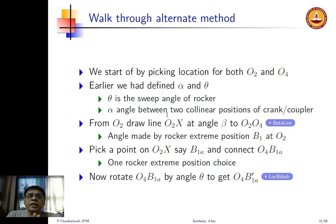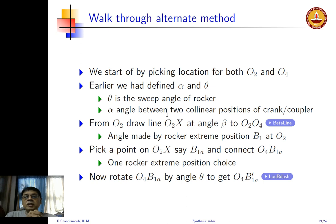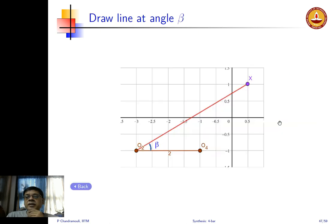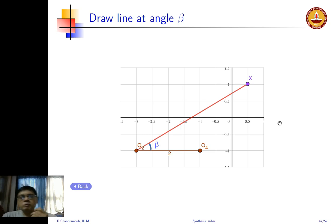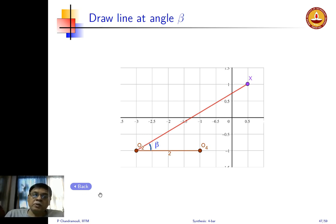We have already defined alpha and theta as design choices: theta is the sweep angle of the rocker and alpha is the angle between the two collinear positions of the crank and coupler. What we do next is draw from O2 a line O2X at some arbitrary angle beta. The O2O4 distance is chosen to be 20 millimeters, and from O2 we draw a line making an angle beta to this O2O4 line. Beta can be anything — just an arbitrary choice.